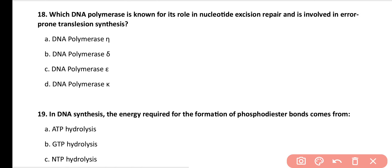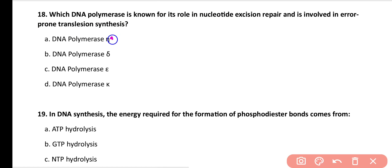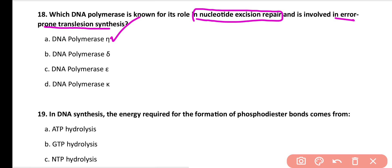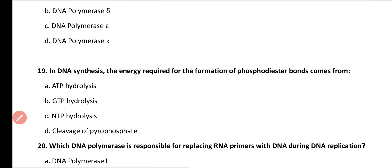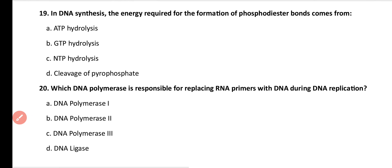Question number 18. Which DNA polymerase plays a role in nucleotide excision repair and is involved in error-prone translesion synthesis? DNA polymerase eta, delta, epsilon, or K? Correct answer is option A. DNA polymerase eta is involved in nucleotide excision repair and similarly involved in error-prone translesion synthesis.